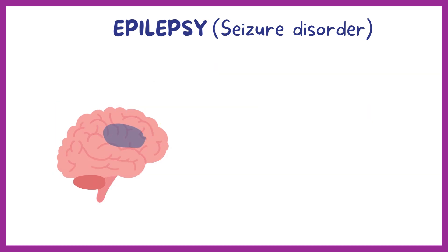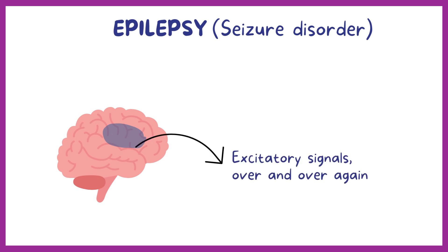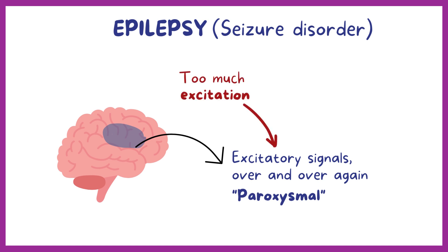During a seizure, clusters of neurons in the brain become temporarily impaired and start sending out a ton of excitatory signals over and over again, and these are sometimes said to be paroxysmal. These paroxysmal electrical discharges are thought to happen due to either too much excitation or too little inhibition.